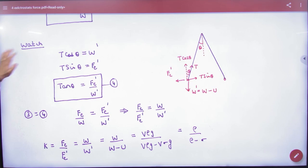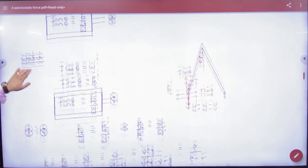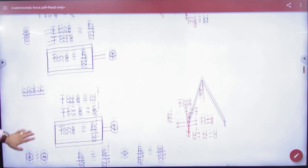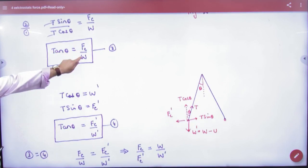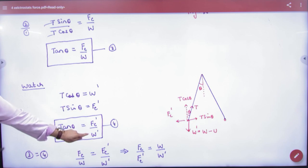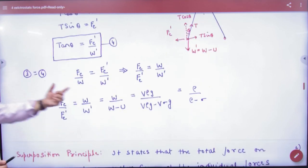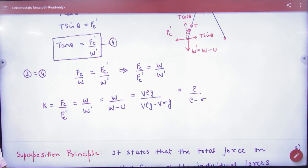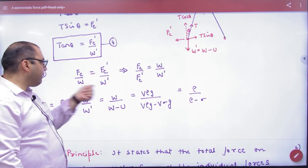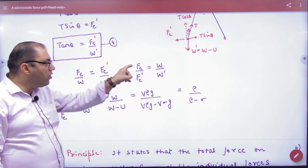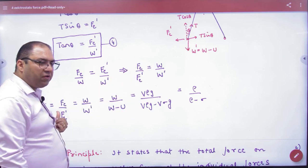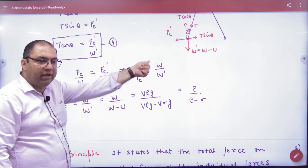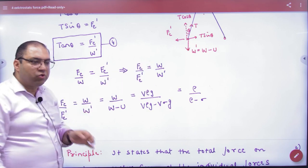In the first case it is tan theta, in the second case it is tan theta. In the first case it is force Fc, then it is Fc dash in the second case. Weight W becomes W dash. The angle has not changed, so let's equate both tan theta values. Cross multiply: Fc/Fc dash. We call force in vacuum and force in medium the dielectric constant. This equals W/W dash.